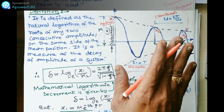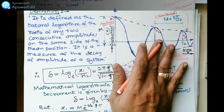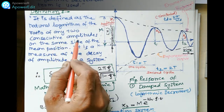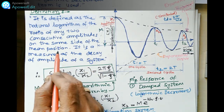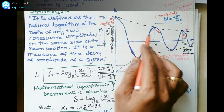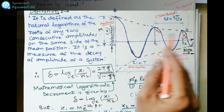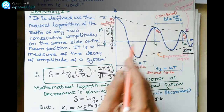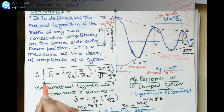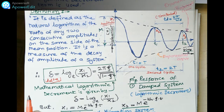Now, what is the definition of logarithmic decrement? It is defined as the natural logarithm of the ratio of any two consecutive amplitudes on the same side of the mean position. For example, x1 and x2 are consecutive amplitudes, or x2 and x3, or x3 and x4 — going on decreasing. So δ = ln(x1/x2). This is the logarithmic decrement, represented by delta (δ), and it has no units.